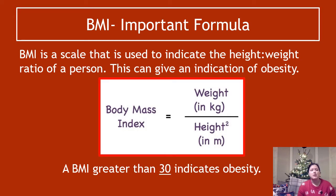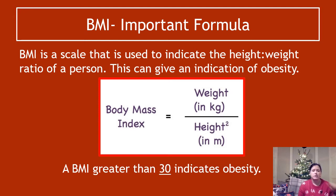BMI is a formula you have to have memorized. There are two formulae in the entire Higher Human course that you need to know in your head: one is cardiac output, CO equals SV times HR, and the other is BMI equals your weight in kilograms divided by your height in meters squared.